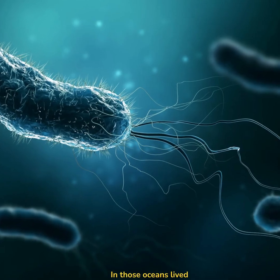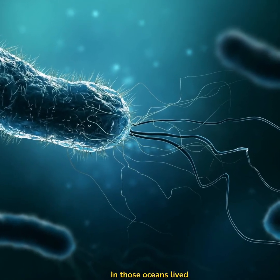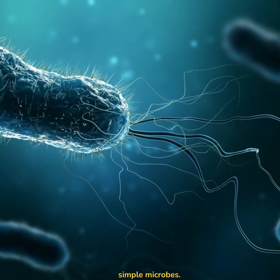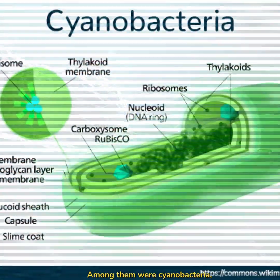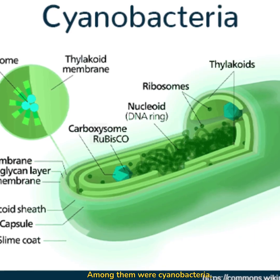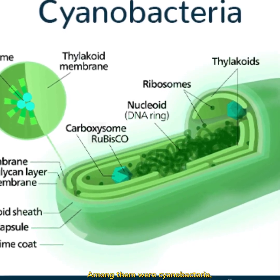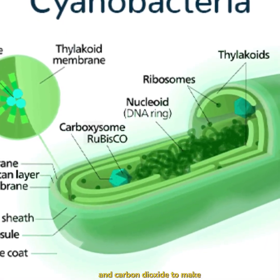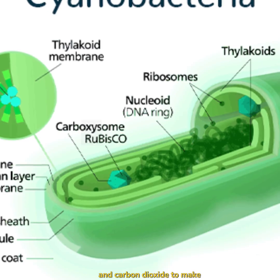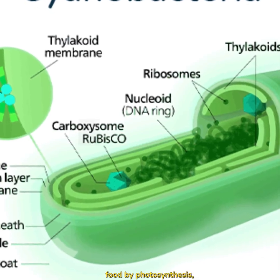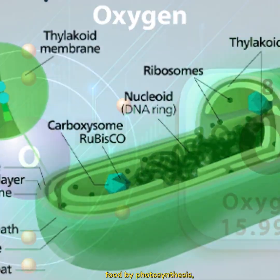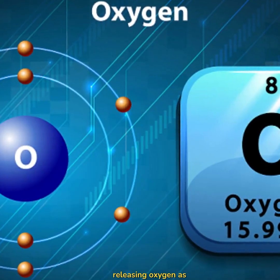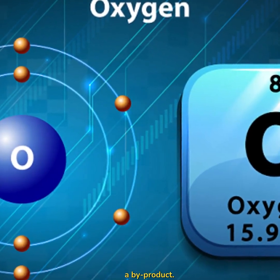In those oceans lived simple microbes. Among them were cyanobacteria, which used sunlight, water, and carbon dioxide to make food by photosynthesis, releasing oxygen as a byproduct.